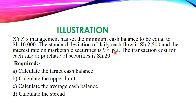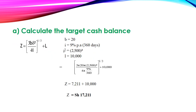We are given the interest rate on marketable securities as 9% per annum, but the formula requires the interest on a daily basis. So we divide 9% by 360 days to get the interest per day. The transaction cost for each sale or purchase of securities is 20 shillings — that is our B, the fixed cost of making a transaction in securities.